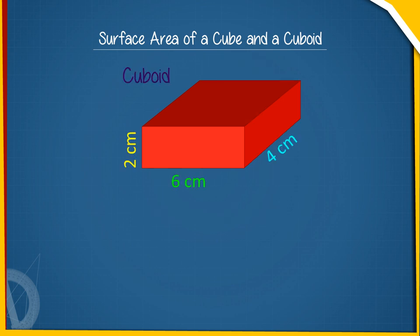A cuboid of dimensions 6 by 4 by 2 cm also has 6 faces. Here, opposite faces are congruent.